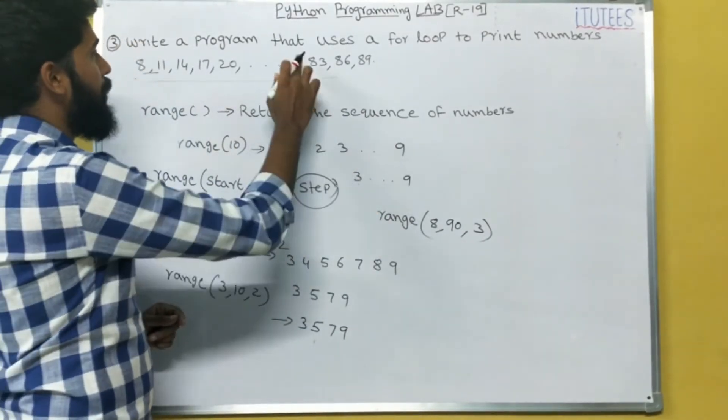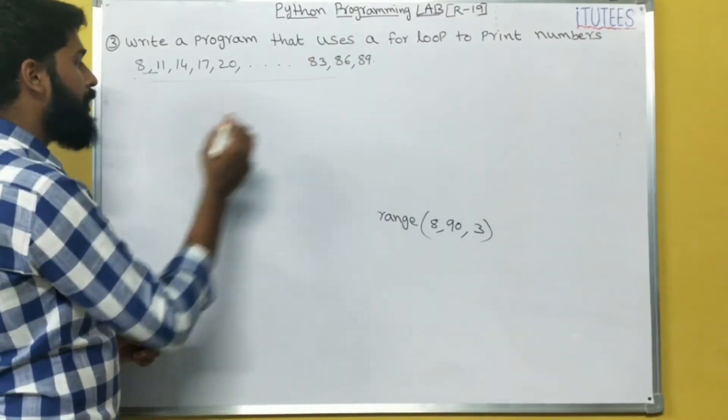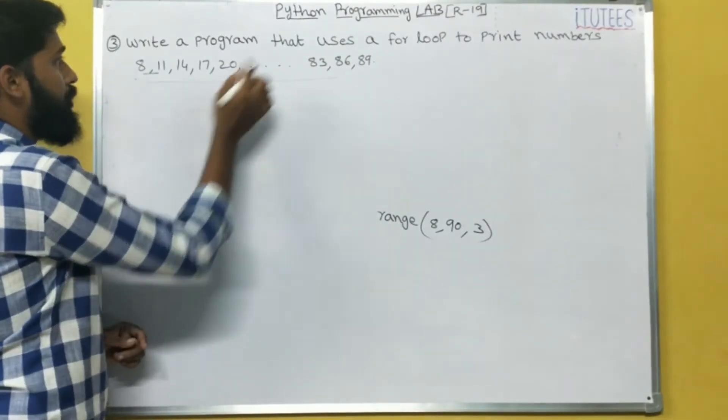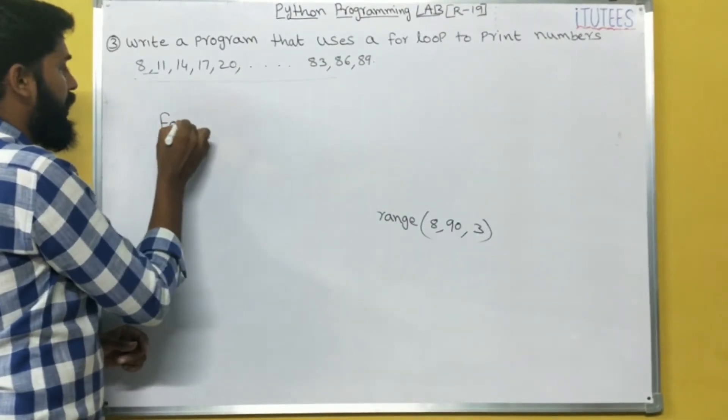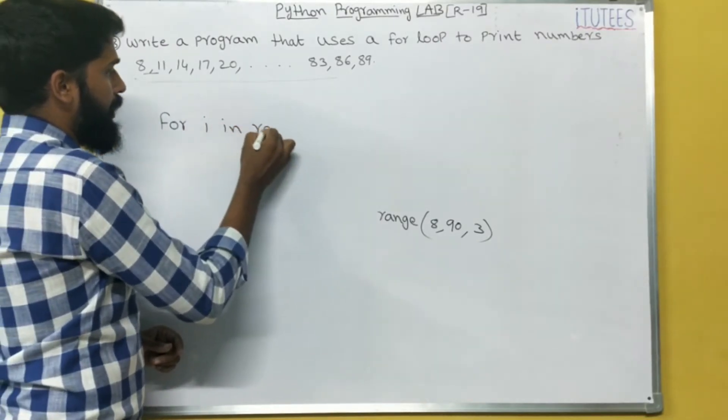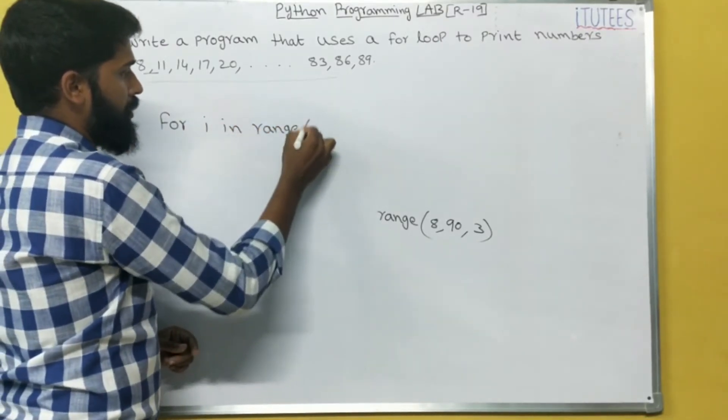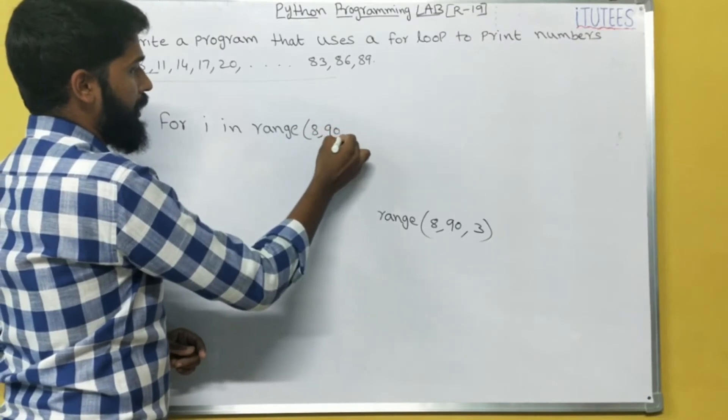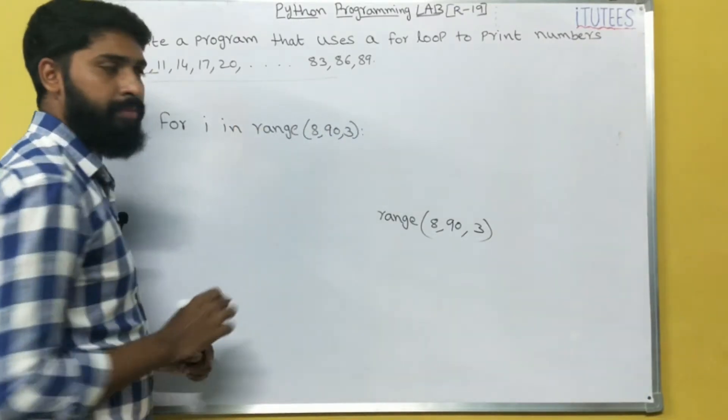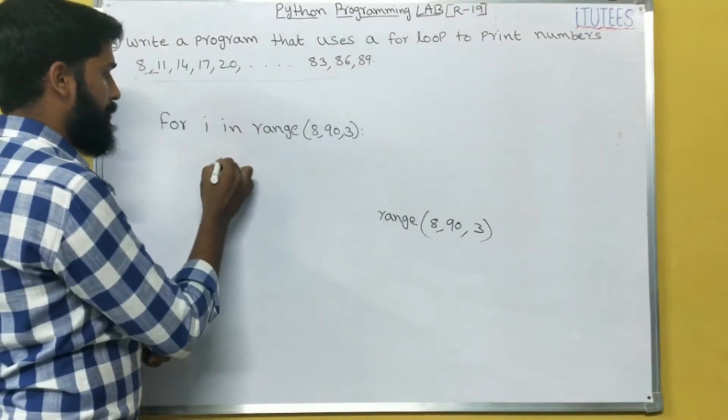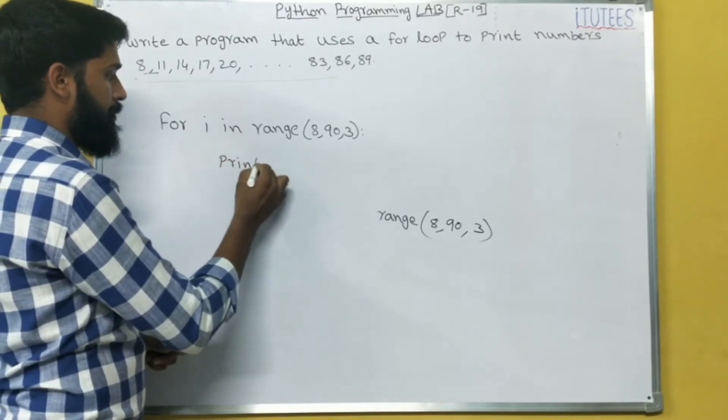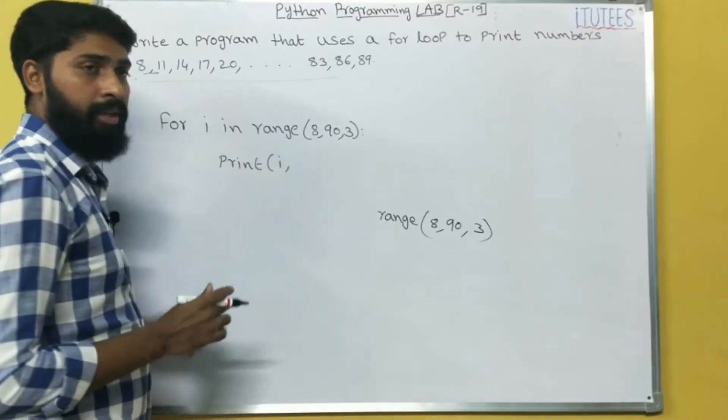Now you can print with the help of for loop. How I can write the program using for loop? For I in range of 8, 90, 3. Simply print I. That's it. Print I.